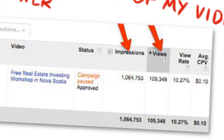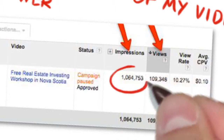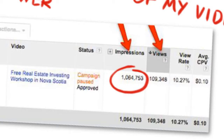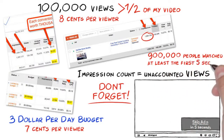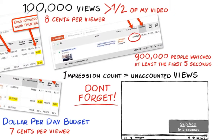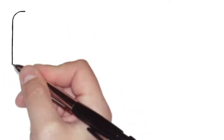Take a look at this. We have over 1 million impressions and over 100,000 views, which means 900,000 plus views of people who watched at least 5 seconds or a little less than half of the video — paid absolutely nothing for these 900,000 unaccounted views. I could show you hundreds of case studies like these, but I'm sure you get the point.